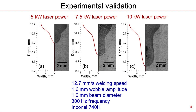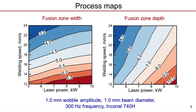The calculated fusion zone transverse sections at three different laser powers match well with the corresponding experimental results. Both the computed and experimental results indicate the formation of deeper keyholes at higher laser powers. We constructed process maps to show how the fusion zone width and depth can be controlled by modifying the wobble welding process parameters. The contour values in the maps represent the fusion zone width and depth in millimeters, showing process maps for various laser powers and welding speeds.